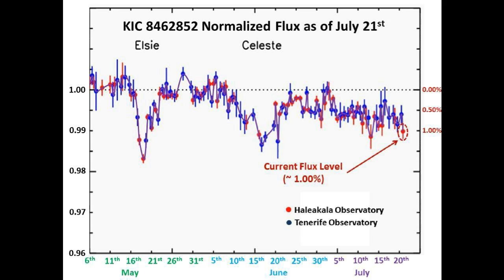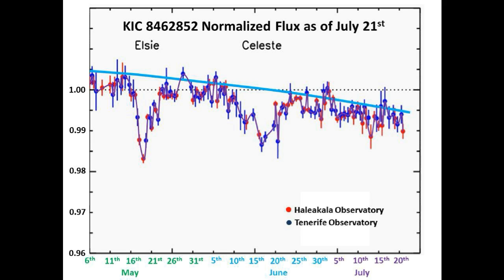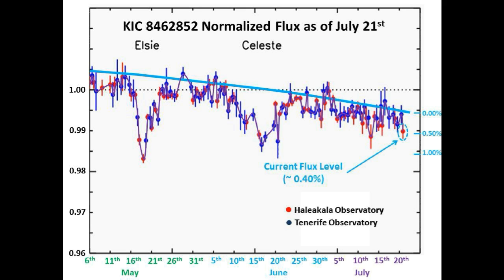Now we will show you the estimated accelerating long-term dimming curve to serve as an alternative nominal flux demarcation. The blue curve is the estimated nominal flux curve, which is synonymous with the accelerating long-term dimming curve. The two data points taken today — one of them is right on the curve and the other is slightly lower at about 0.4% below. We will continue to show you both the conventional and the long-term dimming accelerating curve for your comparison.